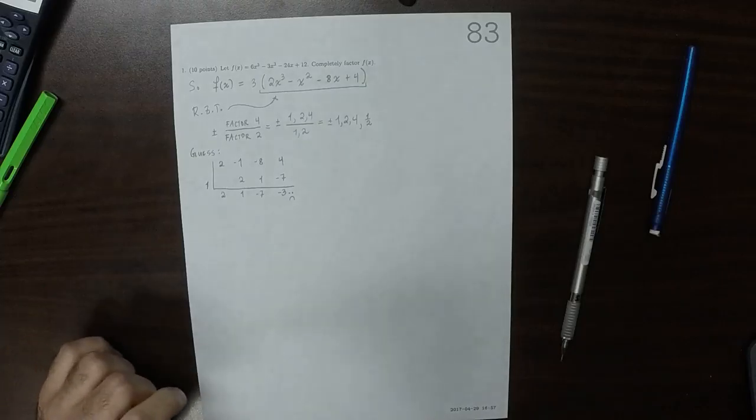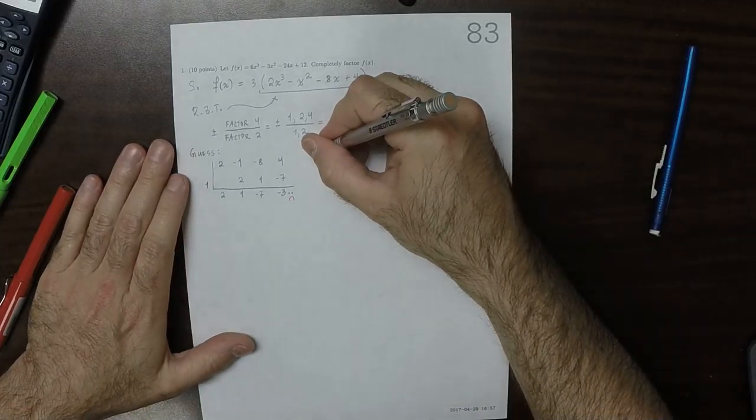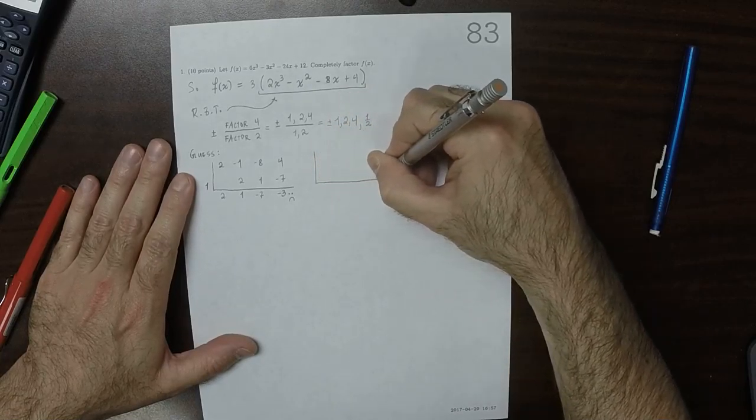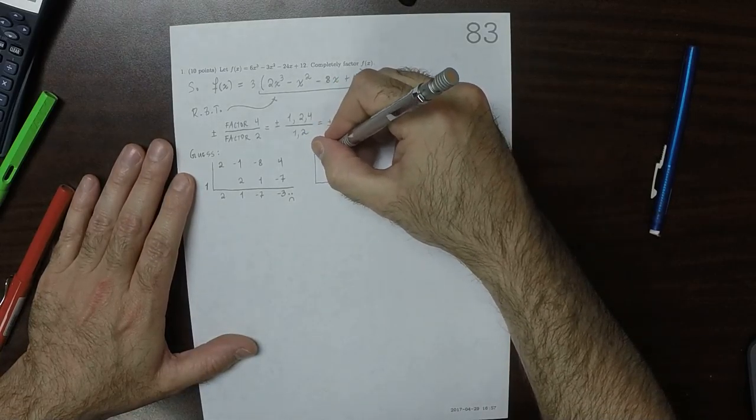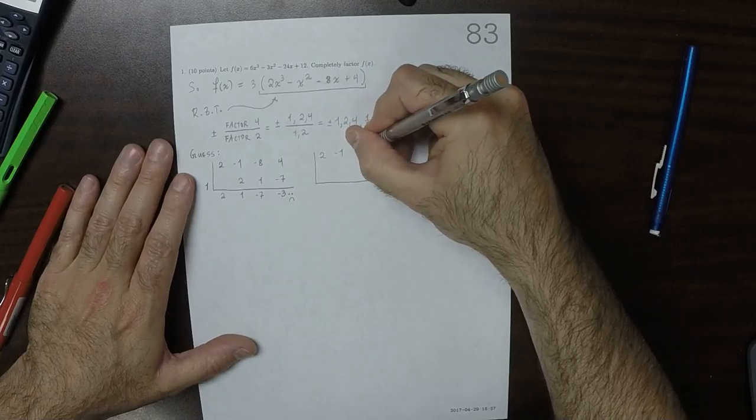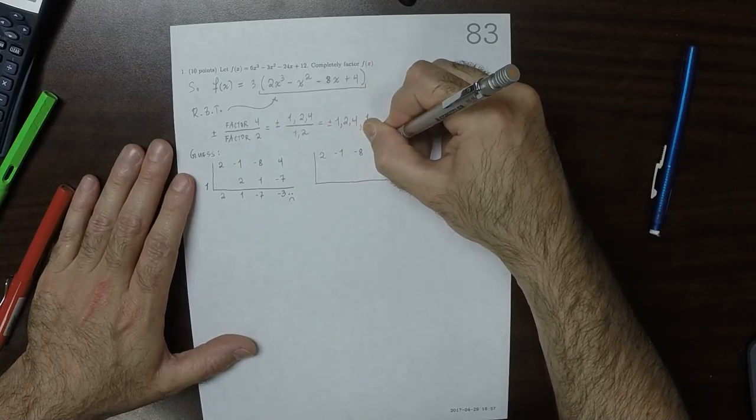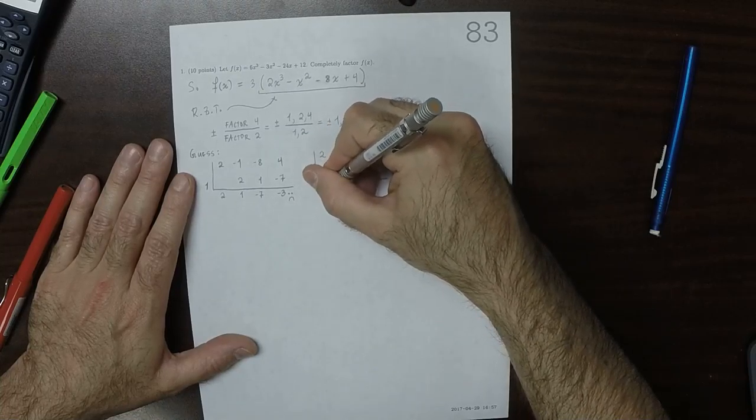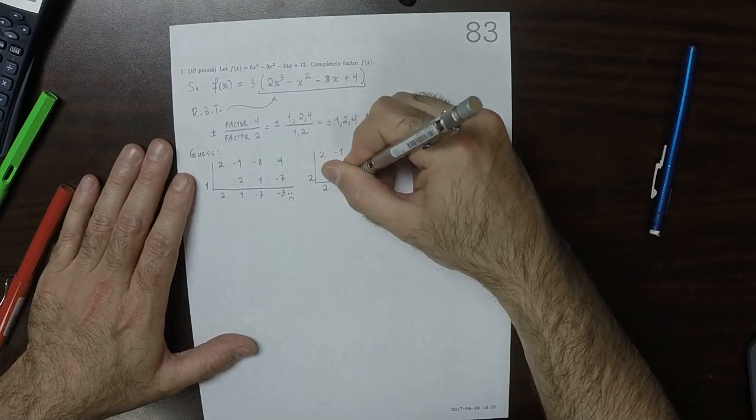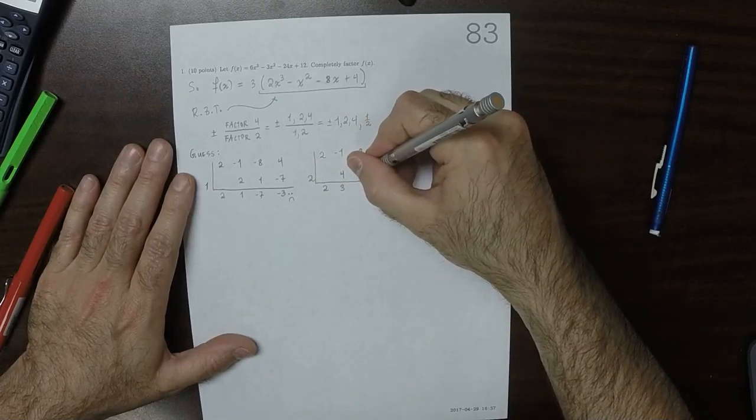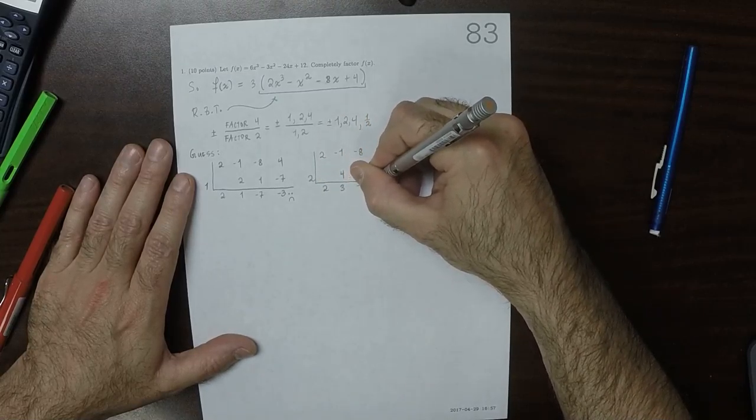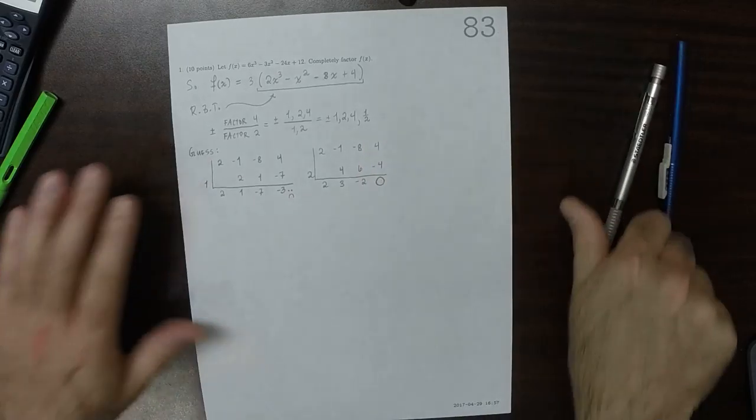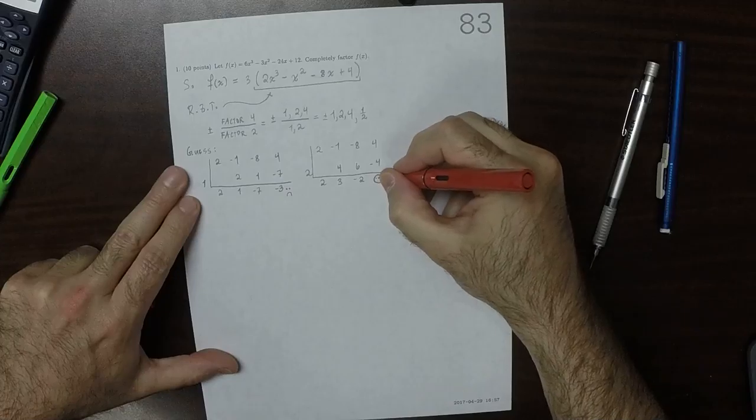Okay, I'll try 2. So 2, negative 1, negative 8, 4, I'll try 2. So we'll carry down the 2, and then multiply, add, multiply, add, multiply, add. So we've got a 0. So that's a smiley.